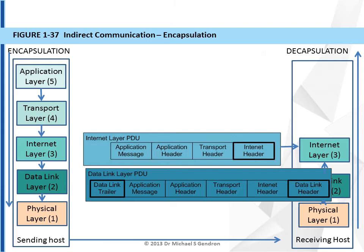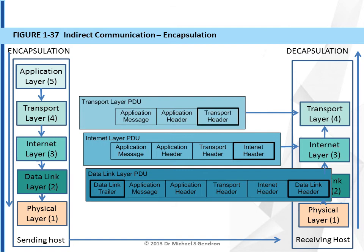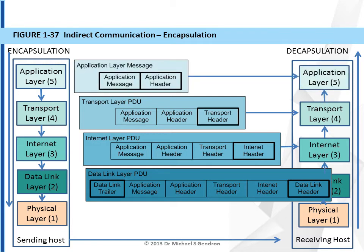The internet layer process reads the header, processes it, and then passes its payload, the transport layer PDU, up to the transport layer. The transport layer analyzes the transport header, it determines which application should get the message, and then it sends the application layer message up to layer 5, which handles the message going to the web server in our example. If this was an email message, it may go to an email client or an email server based upon the type of message and its content.